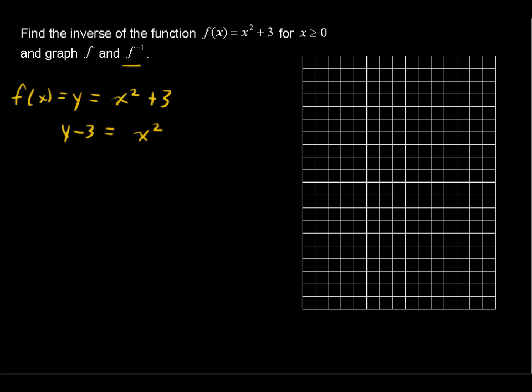Now the step to get x by itself is to take the square root to undo that power of 2, and remember when you take the square root, you have to say plus or minus, so I'm going to write the result and say plus or minus the square root of y minus 3 equals x.